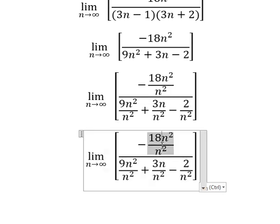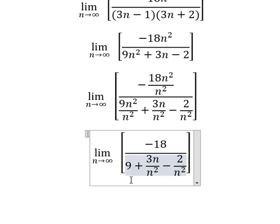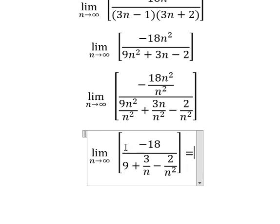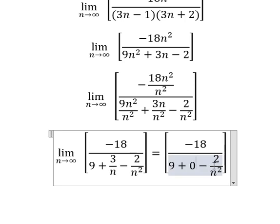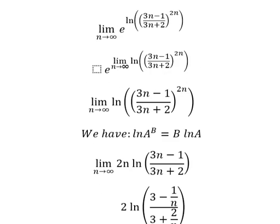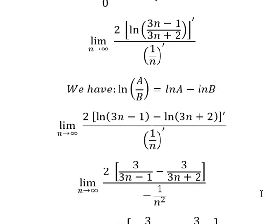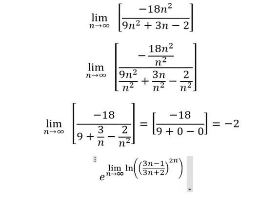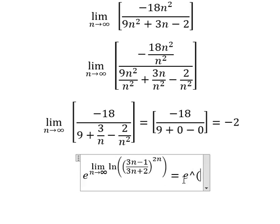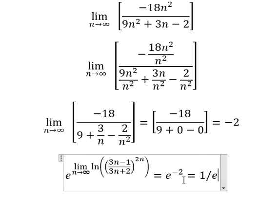So we can simplify — this one, and this one. When n approaches positive infinity, this one you get zero, this one you get zero. Now we have this and we get negative two. Now we need to go back in here — we put negative two here because this is the value of this limit. And we have e to the power of negative two, and we can put one over e to the power of two.